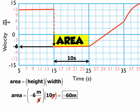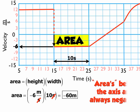Again, not like a typical area because you have a negative answer this time. So negative 60 meters. As a general rule, areas below the axis are always negative.